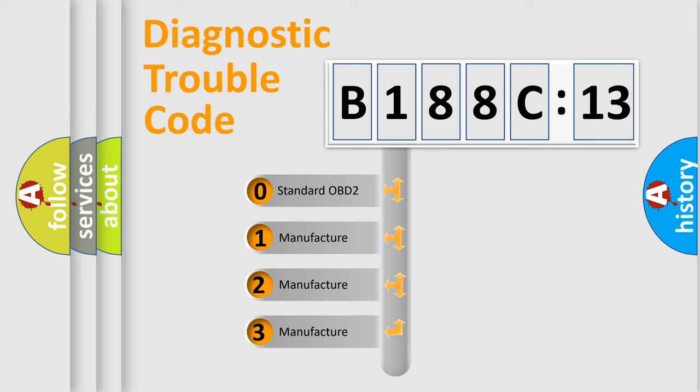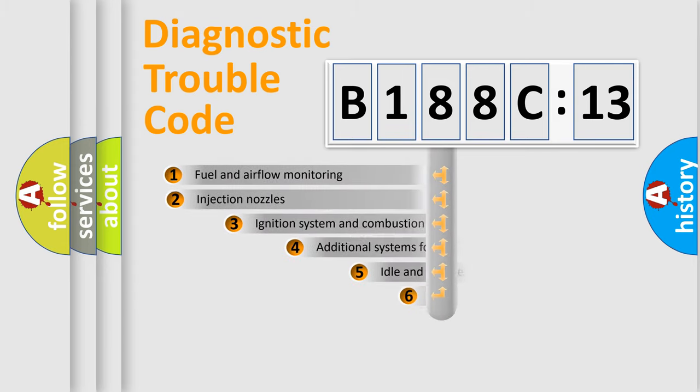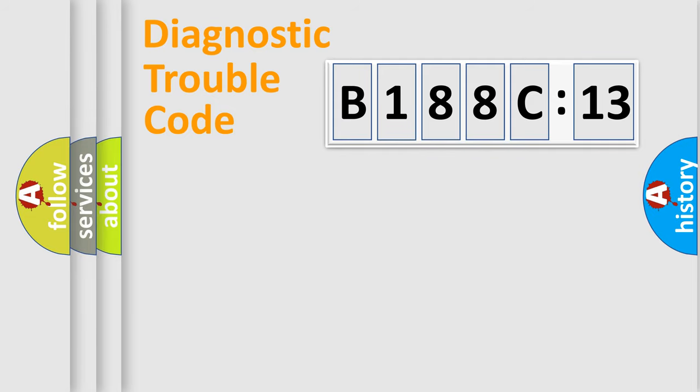If the second character is expressed as zero, it is a standardized error. In the case of numbers 1, 2, or 3, it is a manufacturer-specific error. The third character specifies a subset of errors. The distribution shown is valid only for the standardized DTC code. Only the last two characters define the specific fault of the group.